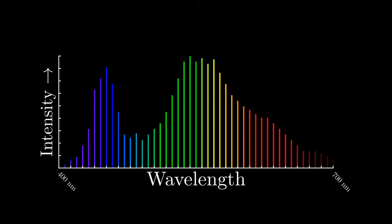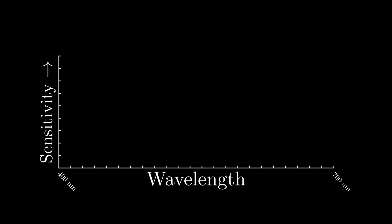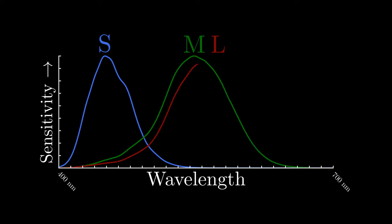Fortunately, our eyes will simplify this jumble of data down to just three values. This is because there are three types of color sensing cones, sensing short, medium and long wavelengths, and thus named S, M and L.